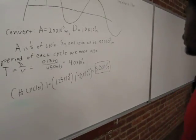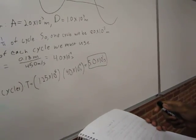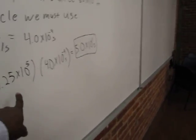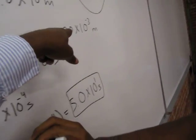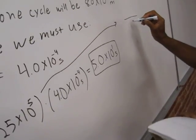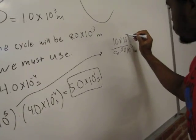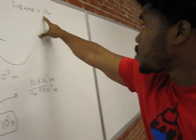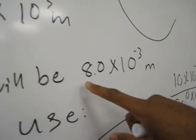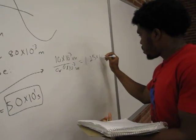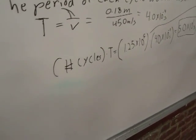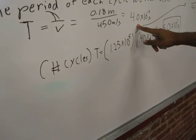What you did was calculate the number of cycles that it would take to go one kilometer. You know that to go through one cycle, it goes 8 times 10 to the negative three meters. So how many cycles would it take to go one kilometer? We did that by dividing one kilometer over 8.0 times 10 to negative three, which gives us 1.25 times 10 to the five cycles.